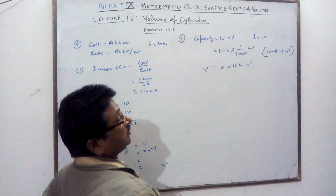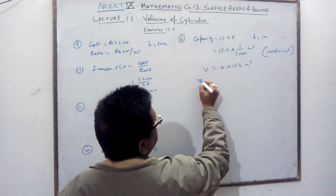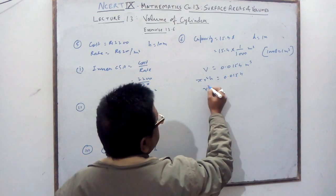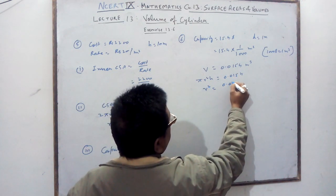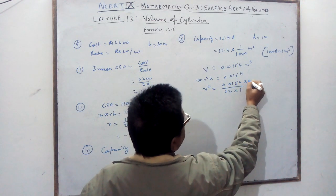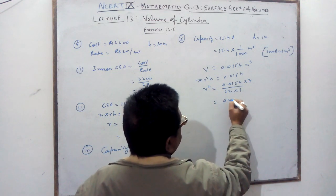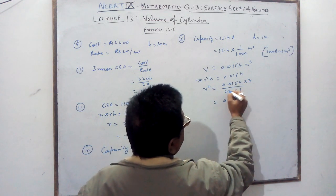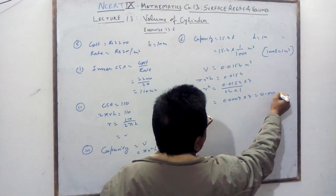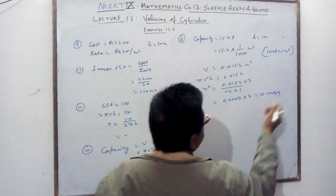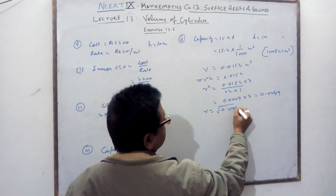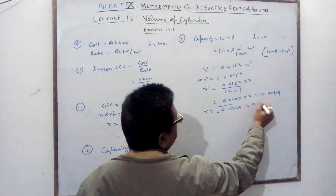Volume of cylinder = πr²h = 0.0154. So r² = 0.0154 divided by (22/7 × 1). Solving: 154 × 7 gives 0.049, so r = √0.0049 = 0.07 meter. That is the radius.